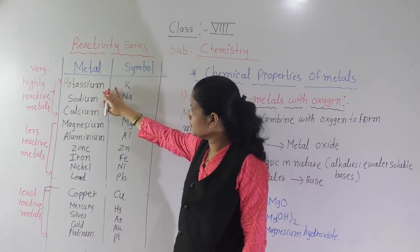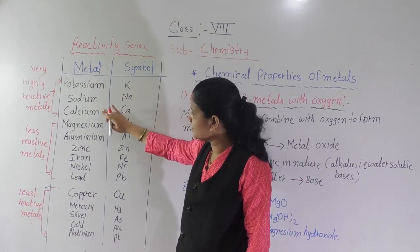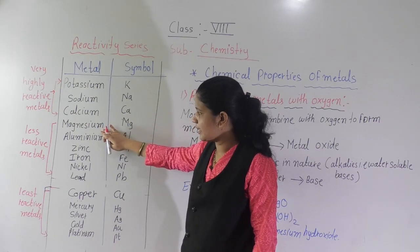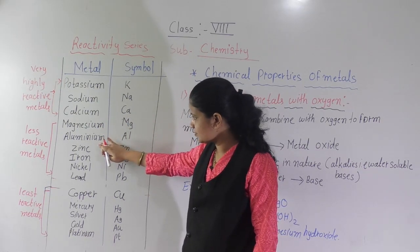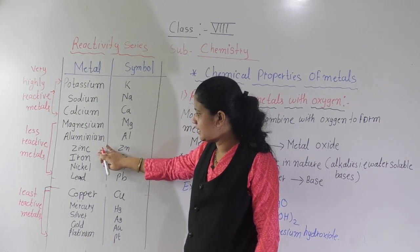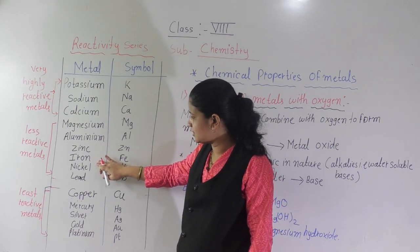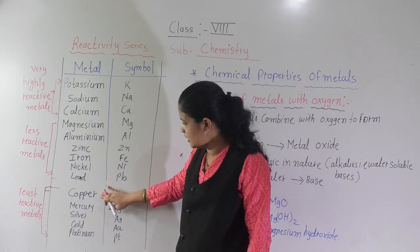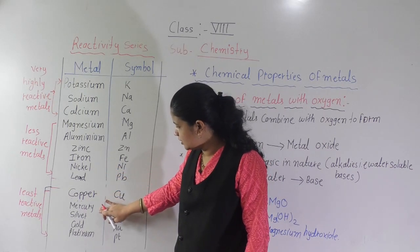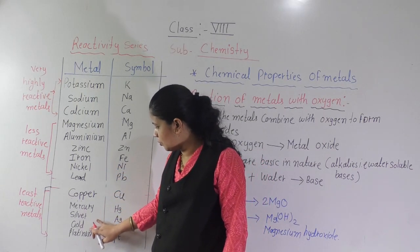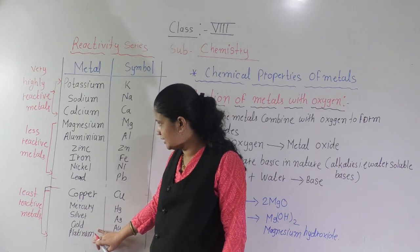The reactivity series lists: potassium, sodium, calcium, magnesium, aluminium, zinc, iron, nickel, lead, copper, mercury, silver, gold, and platinum.